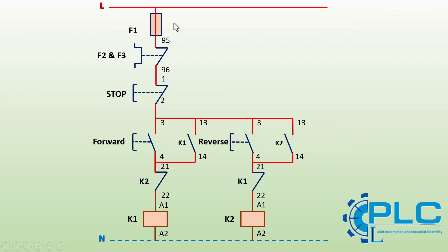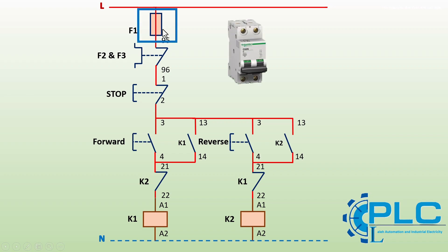Let's break down this circuit diagram step by step. Before wiring a control circuit, we must first design and draw its electrical diagram. This schematic helps us carry out the wiring process more easily and accurately. We will analyze the forward-reverse motor control circuit together, using standardized electrical schematics of various components that are universally recognized worldwide. The first component is the fuse — this is its electrical symbol, typically rated at 2A or 6A in control circuits.